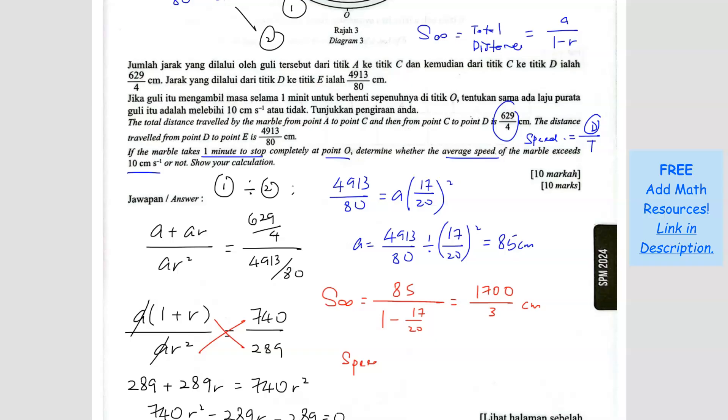We want to find the speed. Speed equals distance over time. Distance is 1700 over 3 divide by the time, 1 minute. Since the unit here is cm per second, I have to use seconds, so it's 60 seconds. Key this in your calculator, you get 85 over 9 which is the same as 9.44 cm per second. The question asks determine whether the average speed of the marble exceeds 10 cm per second. So your answer is no, it does not exceed, because this is less than 10 cm per second. So this is your answer.